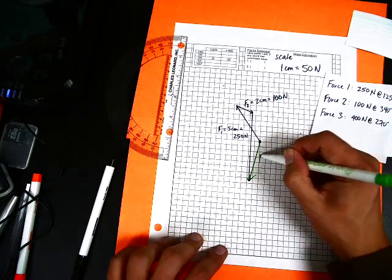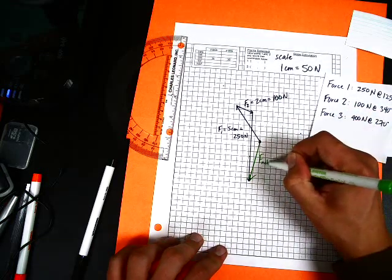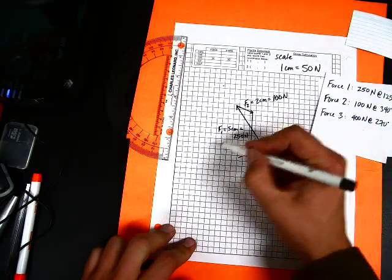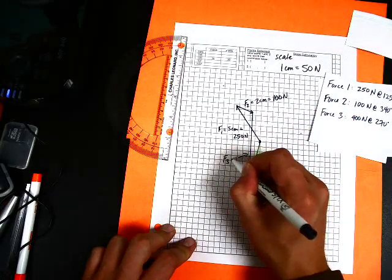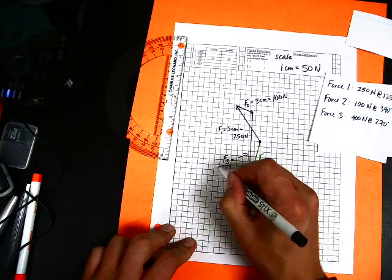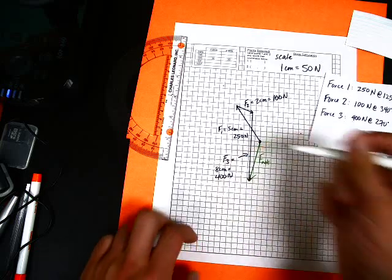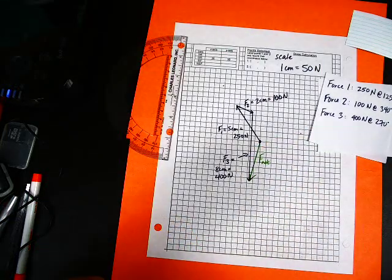And obviously we're going to label this. Oops, and I didn't label my last one. Shame on me. Hopefully you're sitting there at home saying you didn't label that last one, Mr. Barthold. So F3, this one was 8 centimeters long and 400. I like to put both the length and the magnitude just to remind me.